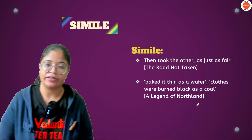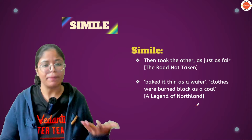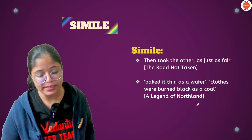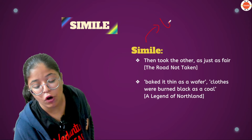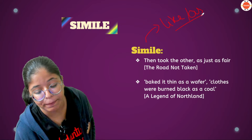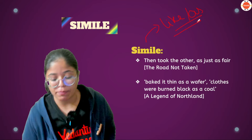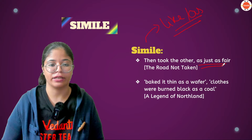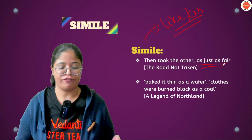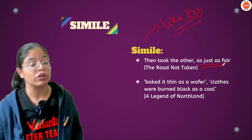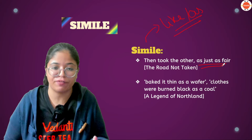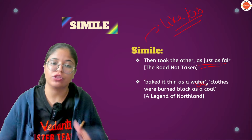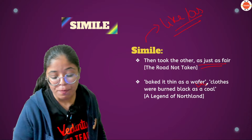Moving ahead — simile. Simile is yet another literary device which you have studied since childhood; it is one of the first literary devices taught to children. What is simile? When you compare two things with the help of 'like' or 'as.' In 'The Road Not Taken,' we say 'just as fair,' comparing the two roads equally. In 'A Legend of the Northland,' we have many similes: 'baked it thin as a wafer,' 'flat as a field,' 'gold as a field.' These are all similes.